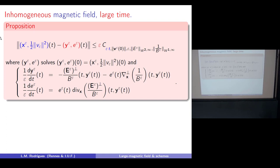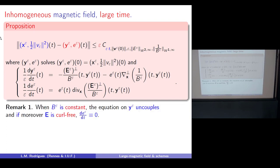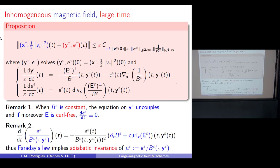You can prove the narrow bound on large time; but now you need a system that couples spatial position and kinetic energy. If you take B constant, the equations decouple. If B is also constant and E is constant, then the kinetic energy is constant in the limiting model — not for the original, but in the limit. And if B is not constant but comes from a potential, there is another conserved quantity: E over B, which is the adiabatic invariant.